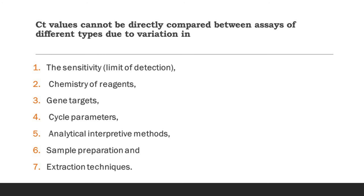Different laboratories use different assays, and hence the CT value of one laboratory cannot be directly compared with another. This is because there is variation in the following factors: sensitivity, chemistry of reagents, gene targets, cycle parameters, analytical and interpretative methods, and sample preparation and extraction techniques.